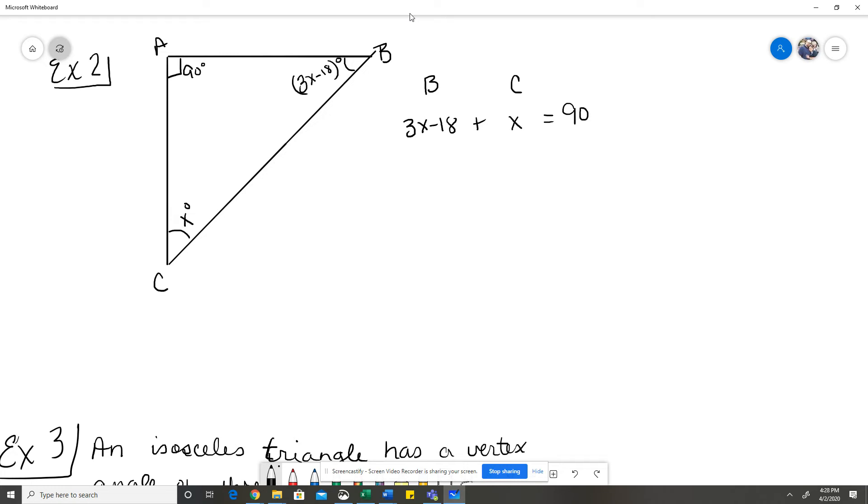Again I'm just going to solve the equation. So I'm going to start by simplifying 3X plus X is going to give me 4X minus 18 equals 90. I'm going to add 18 to both sides. So 4X equals 108. And then when I divide that by 4, I find out that X equals 27.